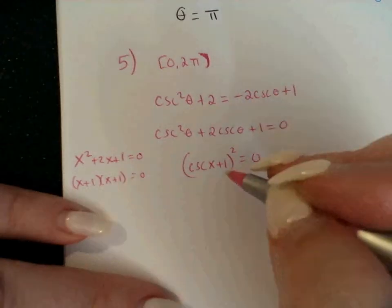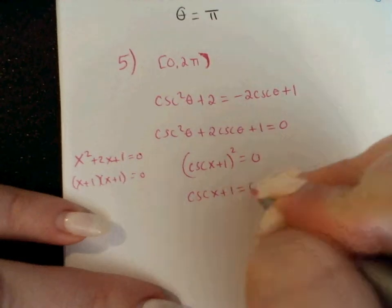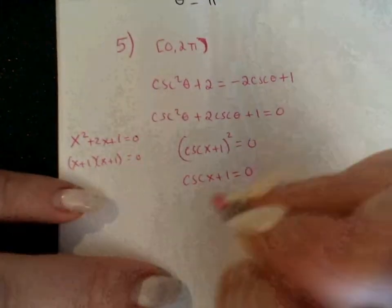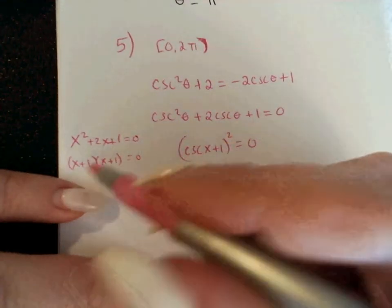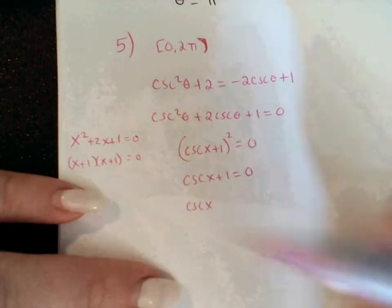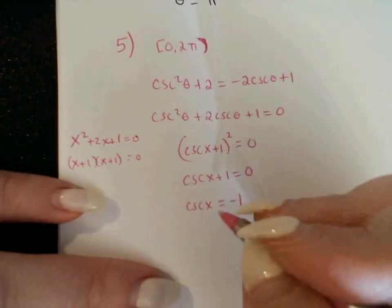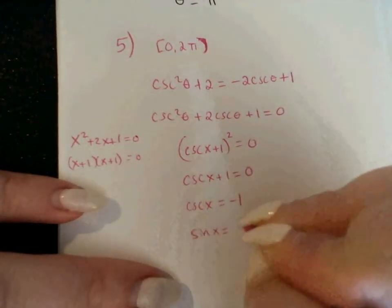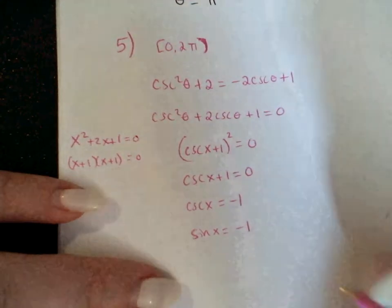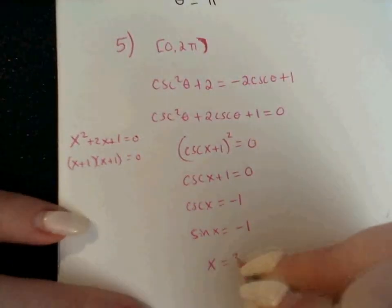To solve for x, I take the square root of both sides, which gives cosecant plus 1 equals 0. I could have set each factor equal to 0, but since they're the same, we just solve one. I'll subtract the 1 over: cosecant equals negative 1. Similar to number 1, cosecant equals negative 1 when sine equals 1 over negative 1, which is still negative 1. Sine is negative 1 at 3π/2, so theta equals 3π/2.